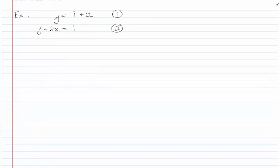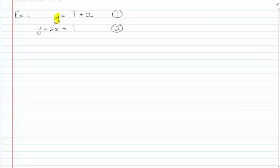But what does change is this time I'm going to recognize that y is by itself, and it's equal to 7 plus x. So if y is equal to 7 plus x, I think I could write Equation 2 as, plus 2x equals 1, but I'm going to write 7 plus x in, instead of y.